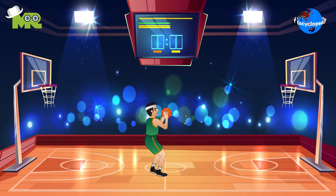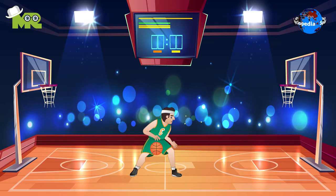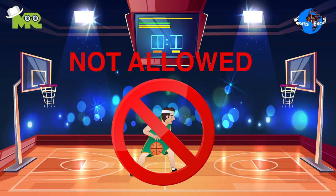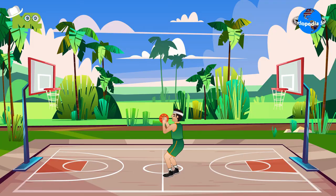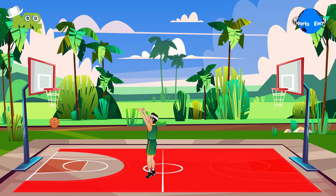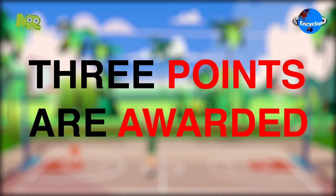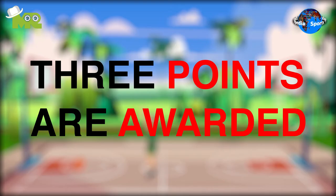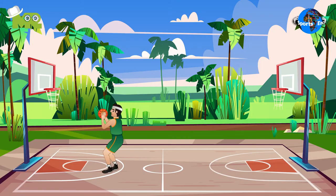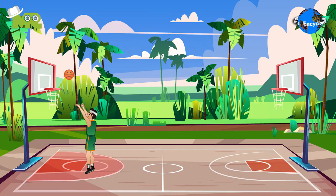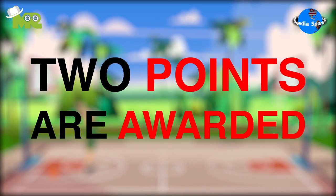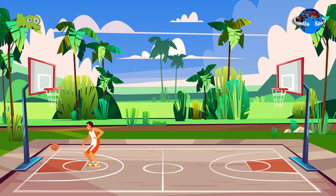It's not allowed for a player to dribble again once they've put both hands on the ball. If a player scores a basket from outside the three-point arc, three points are awarded to the team. If a player scores from inside the three-point arc, two points are awarded. A successful free throw gets one point to the team.